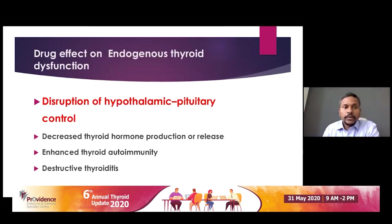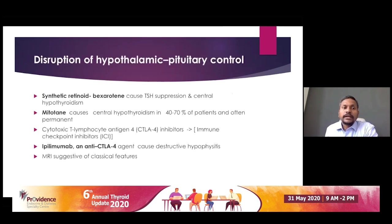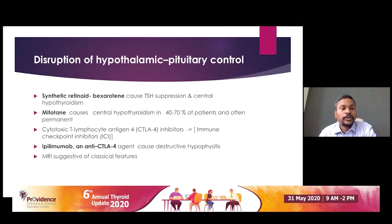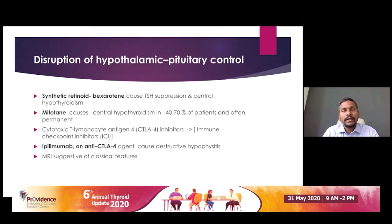For endogenous thyroid dysfunction, the first mechanism is disruption of hypothalamic-pituitary control. The classical example is synthetic retinoids — bexarotene — which can cause TSH suppression and will mimic central hypothyroidism: TSH suppression and subsequent decreased T4. Mitotane, usually used in adrenocortical carcinoma, can cause central hypothyroidism in about 40 to 70% of patients, and most cases are permanent. CTLA-4 inhibitors — immune checkpoint inhibitors, ICI — specifically ipilimumab, which is anti-CTLA-4, usually causes hypophysitis that clinically, biochemically, and on imaging looks like classical hypophysitis.